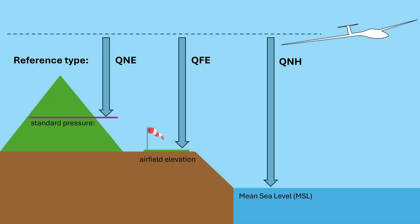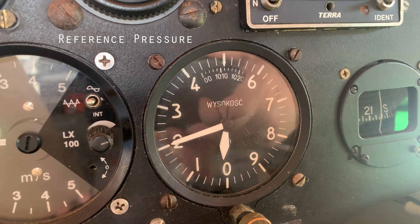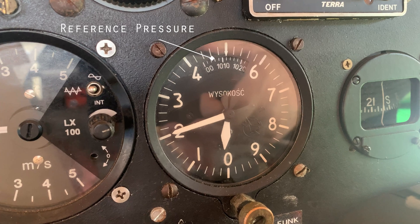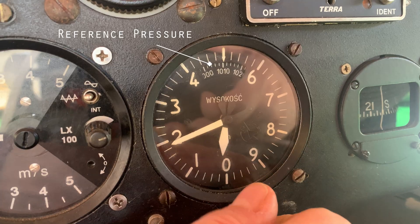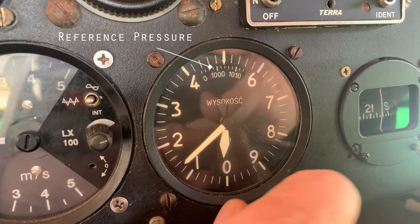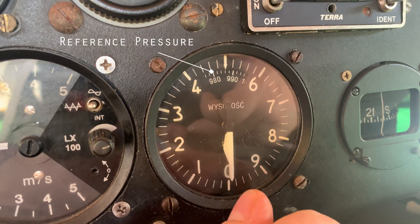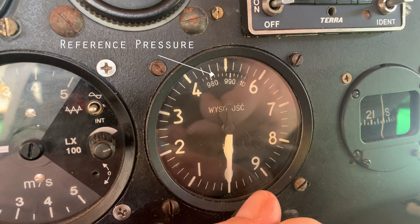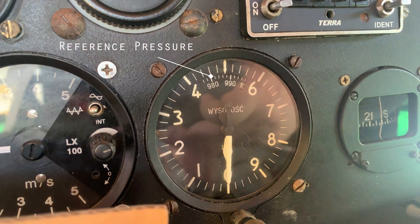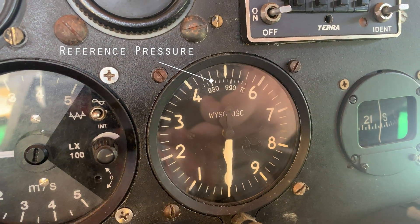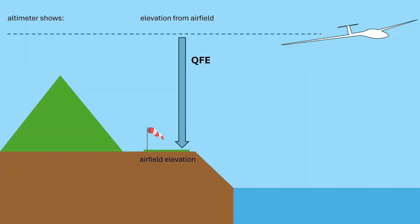Although the instrument is called an altimeter, it doesn't always show the same type of altitude — that depends on the reference pressure you've set. You can see that reference in a small window, usually with a knob next to it. Adjusting it changes both linked scales: air pressure and altitude. For short local flights, you usually set the altimeter to zero on the ground, meaning the field elevation — known as QFE. The matching pressure appears in the small window automatically, so when the altimeter shows zero, you're on the ground.